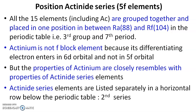Lanthanides and actinides are separately placed at different positions. The position of lanthanides is third group and sixth row; the position of actinides is third group and seventh row. The number of lanthanides is 14 — cerium to lutetium. Similarly, there are 14 actinides — thorium to lawrencium. These are the important key points about the inner transition elements, especially about their position. In the next video, we are going to discuss the chemistry of lanthanides.